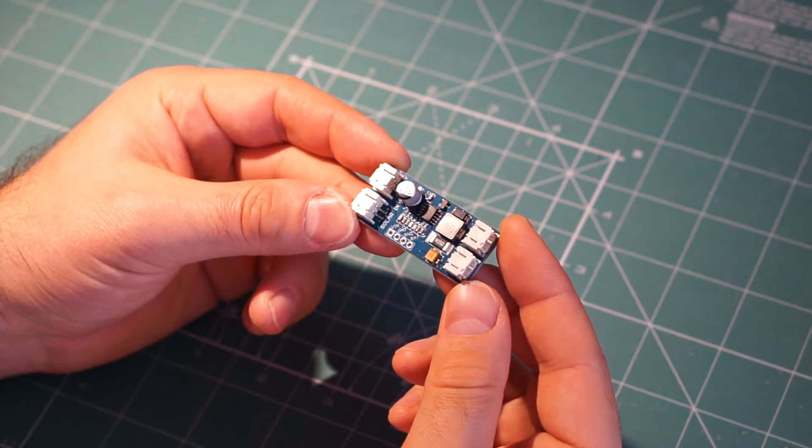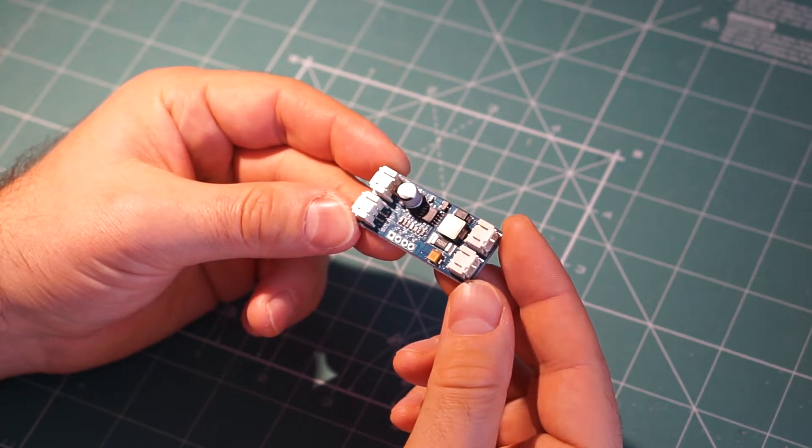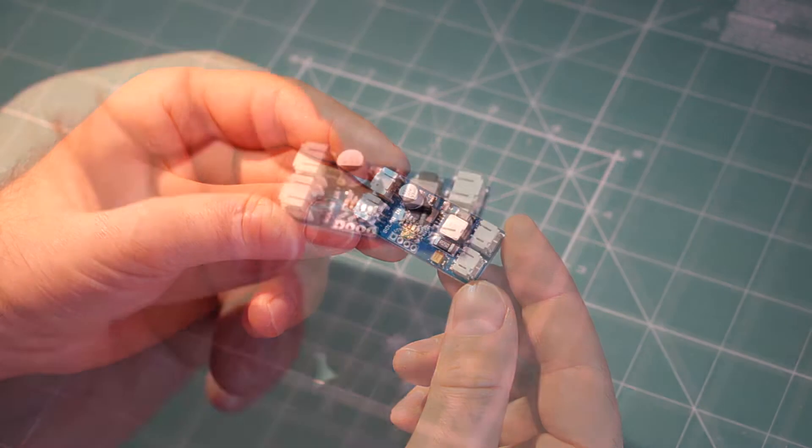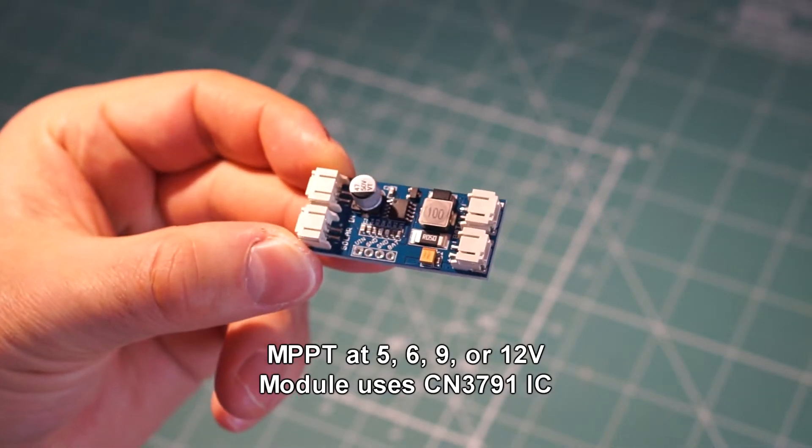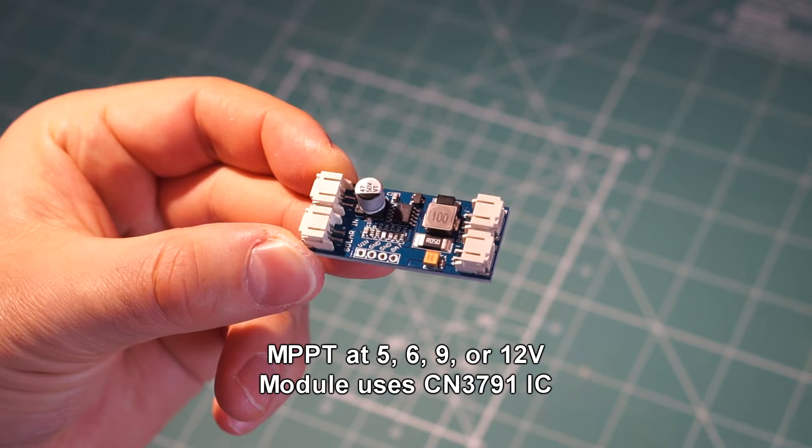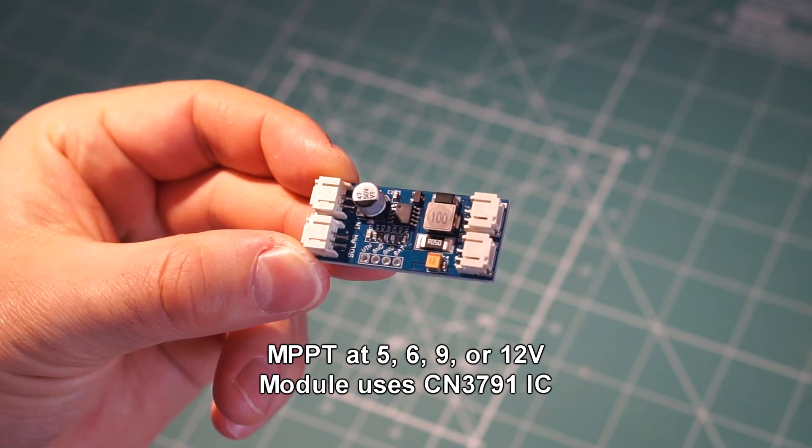Another important element in this project is this solar charging controller. It supports maximum power point tracking, which is a fancy way of saying that it puts as much power as possible from the solar cell into the battery.